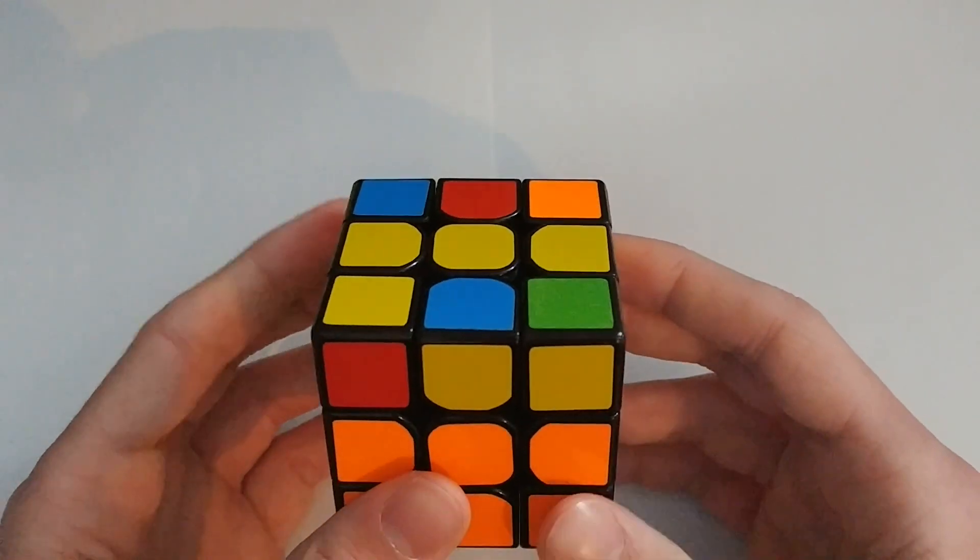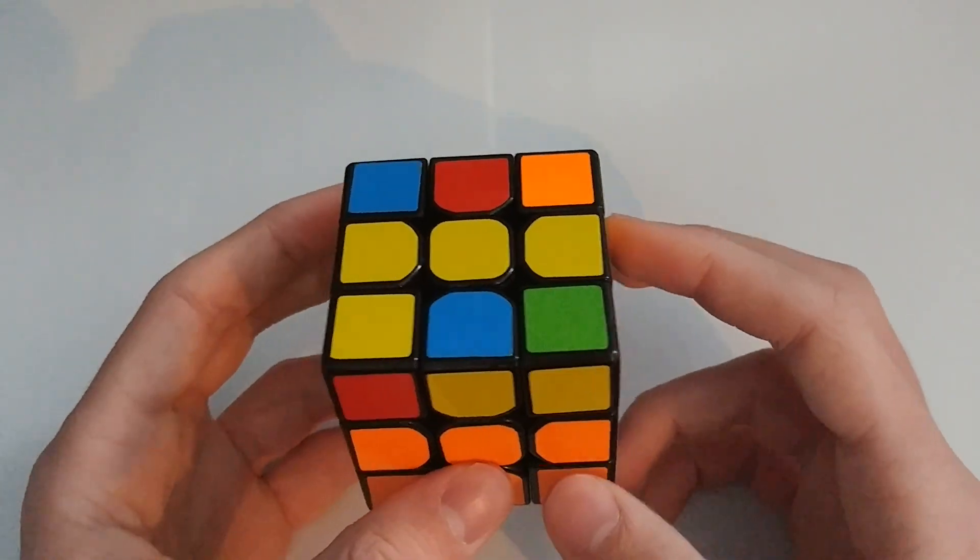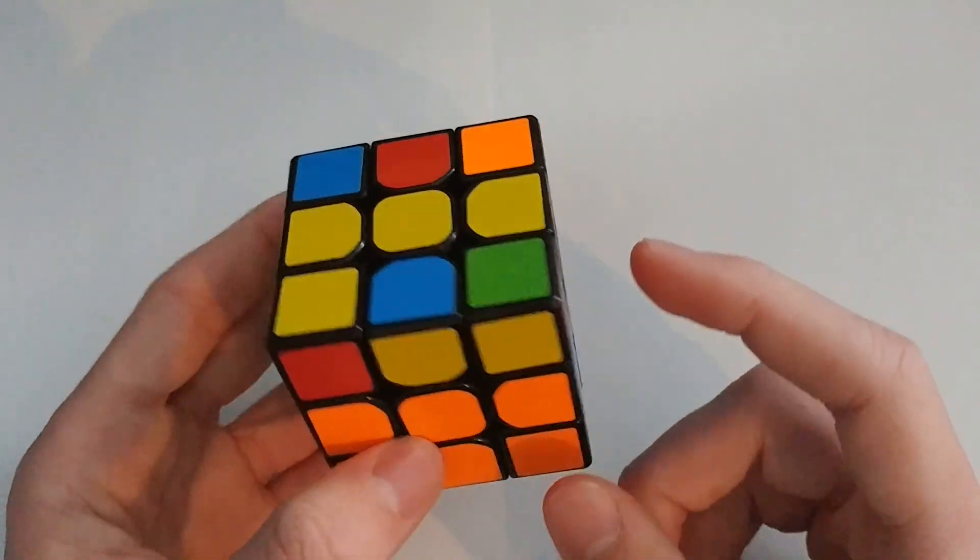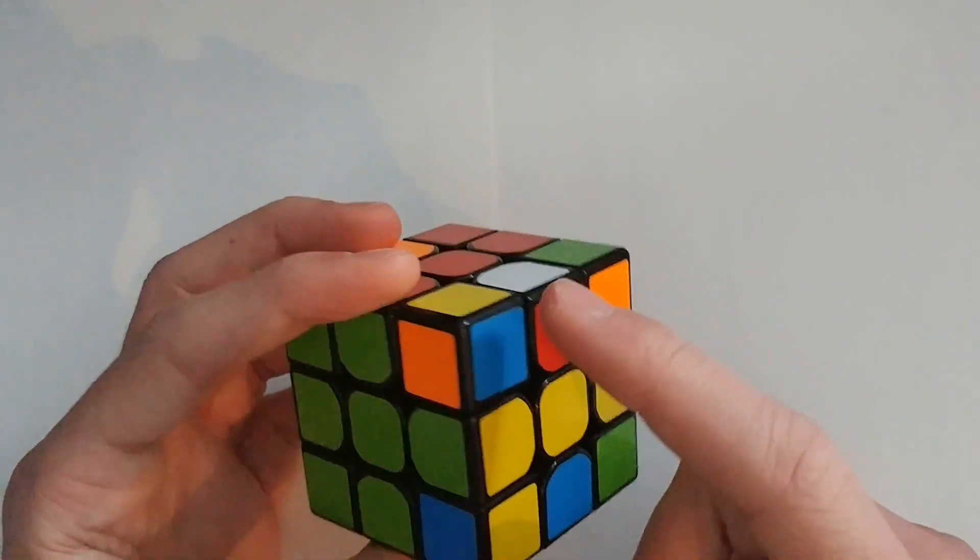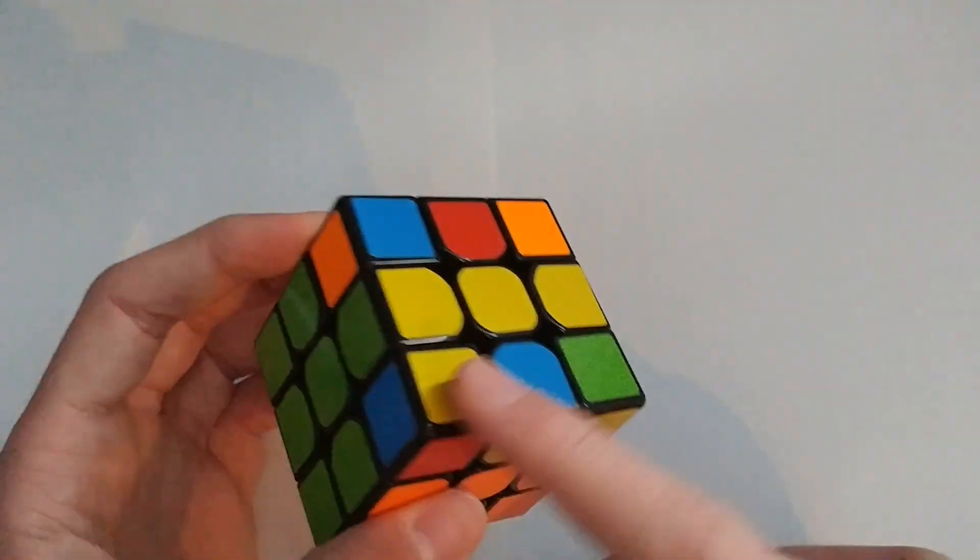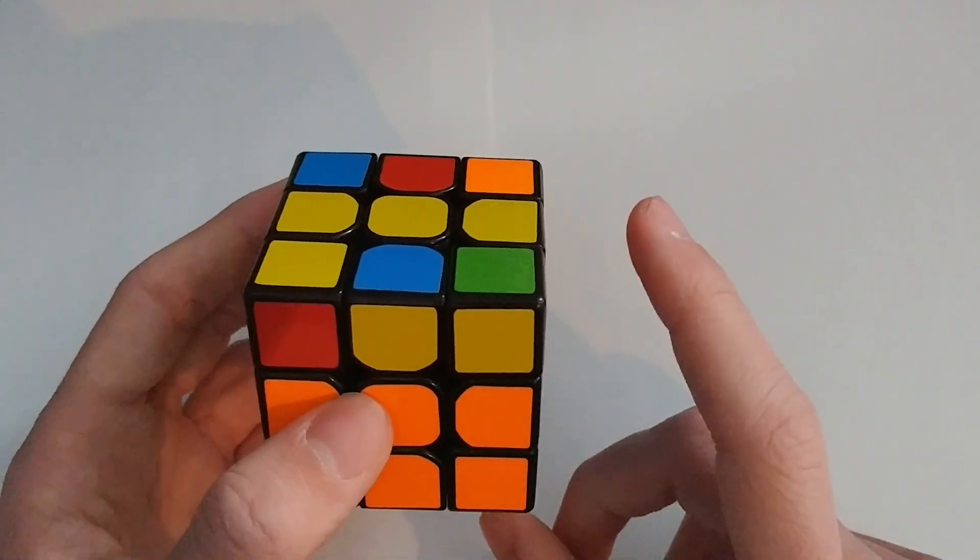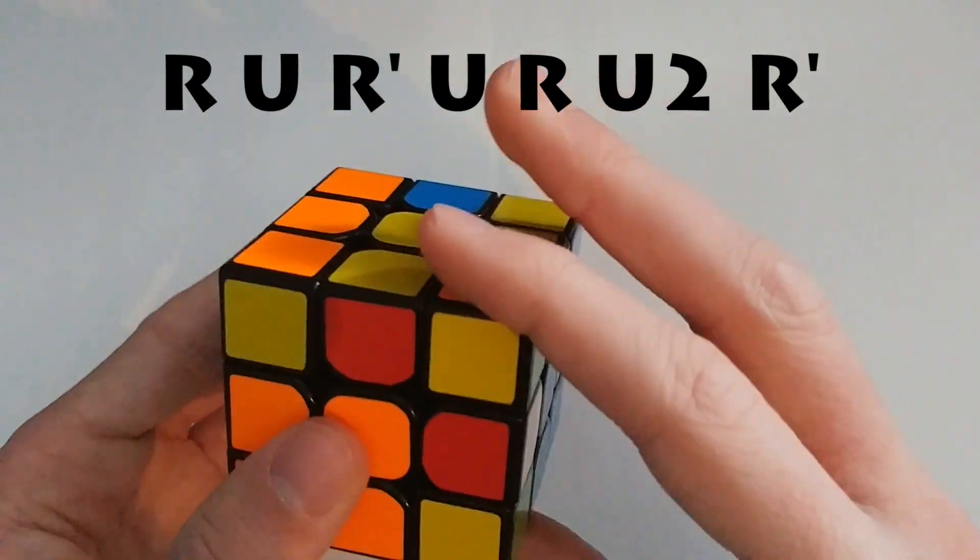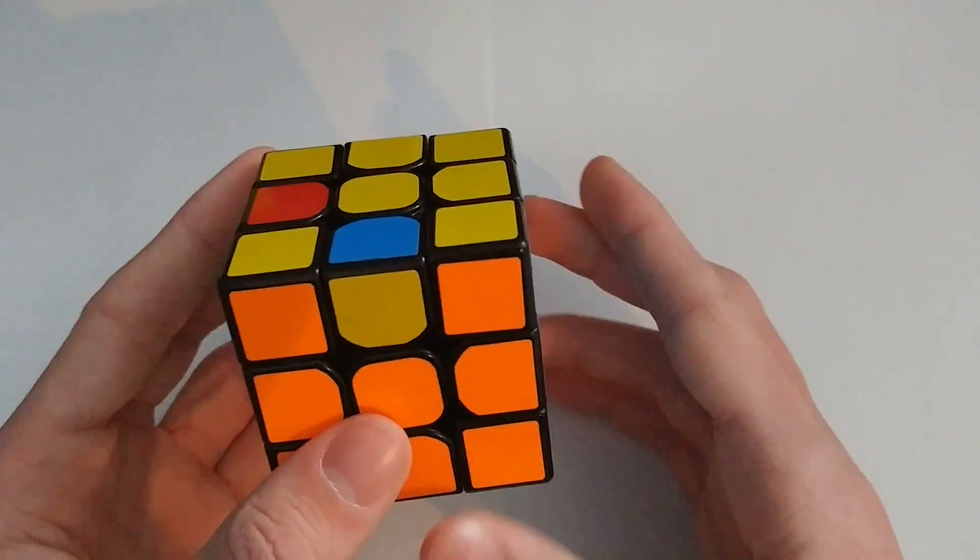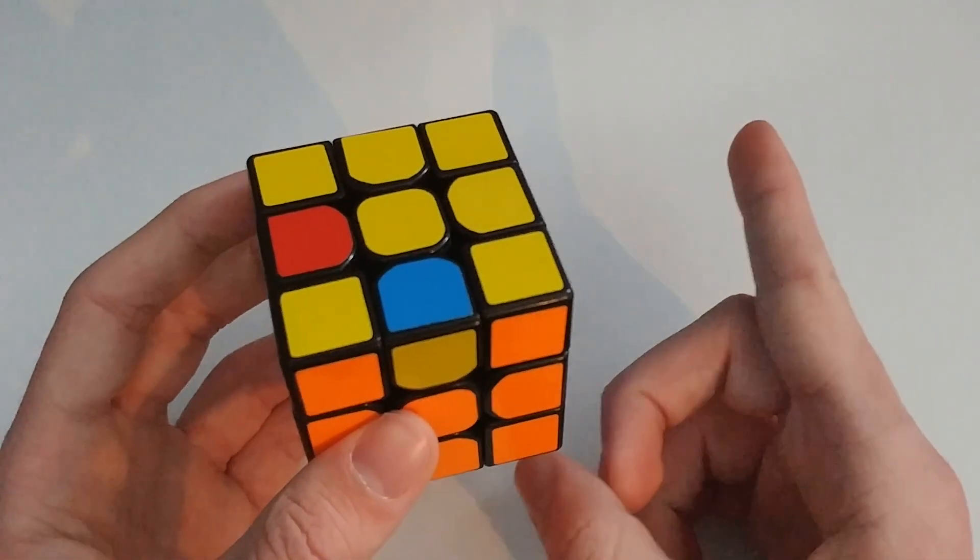So this is the first case. You have one sticker that's facing up, so correctly oriented, and what you're going to do is you're going to look at these stickers here. If you put this in the bottom left corner and you have a sticker facing out like this, then you can do this algorithm. Now that can be done really fast, but I have a faster way to do it, except I'm not going to teach you that just yet. I'm going to move on to the next case.